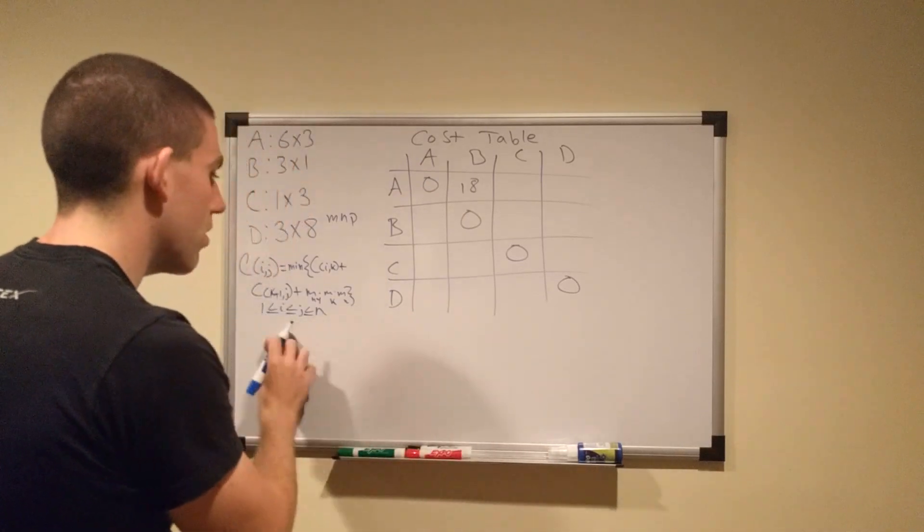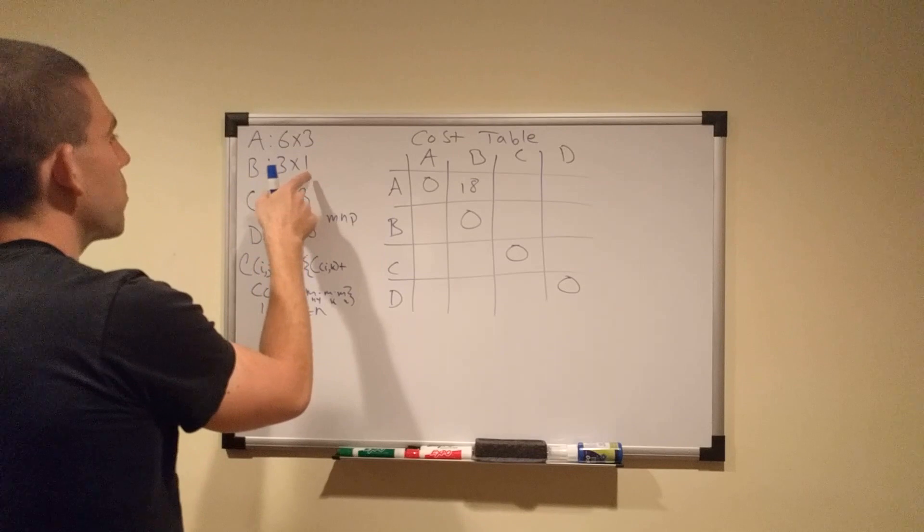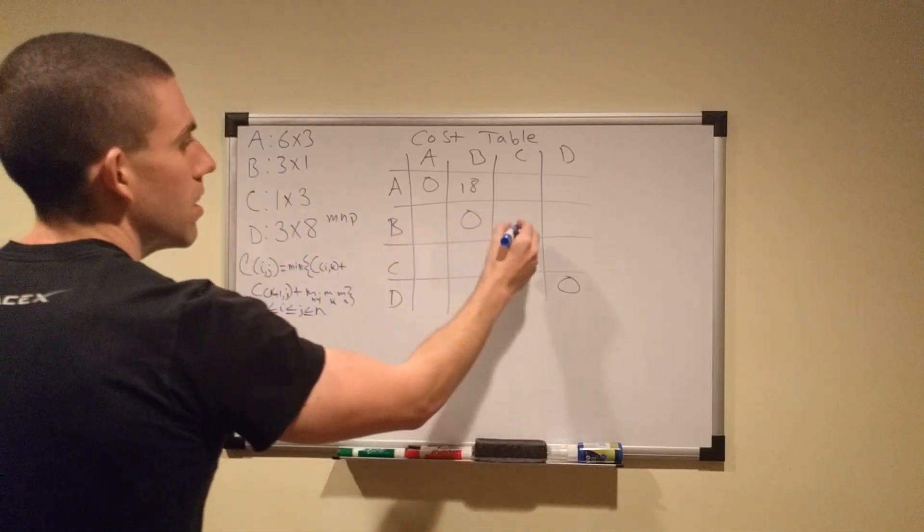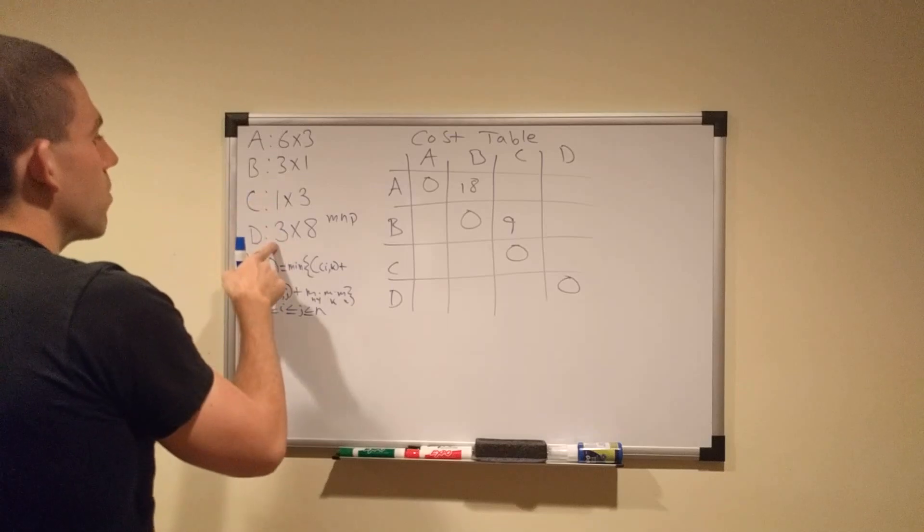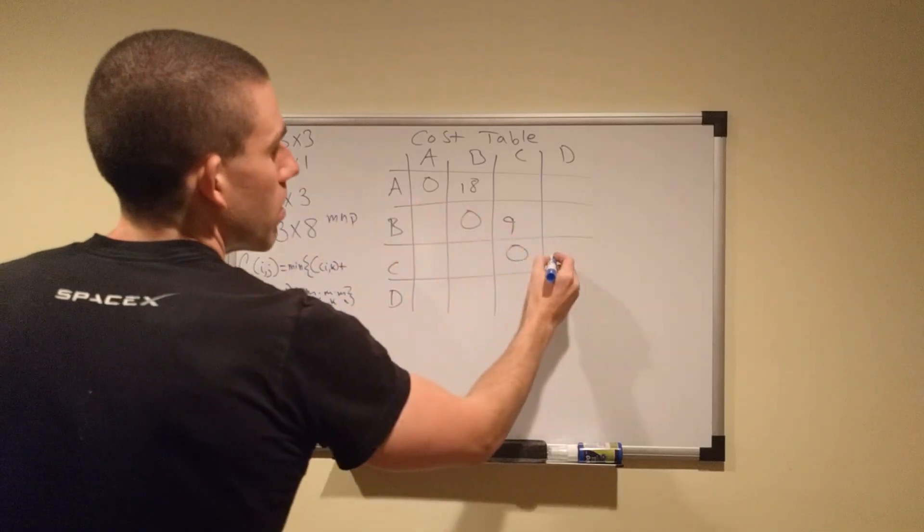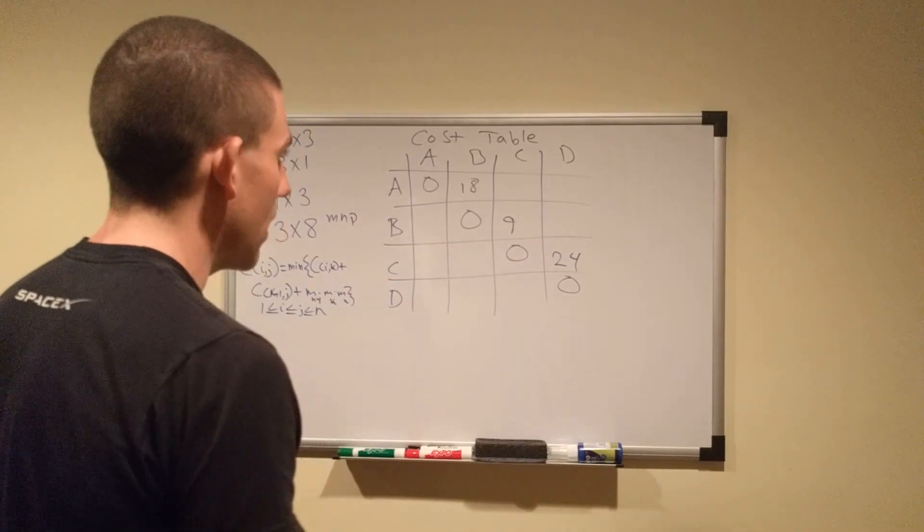Now we'll do B times C. We have B times C, three times one times three is nine. C times D: one times three times eight is twenty-four multiplications to get C times D.